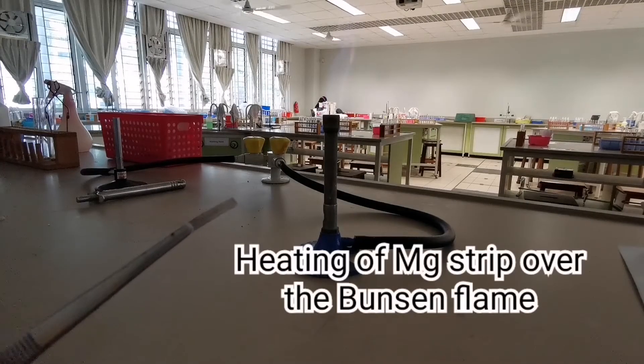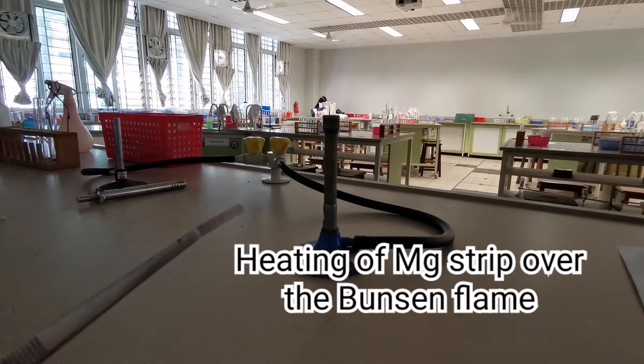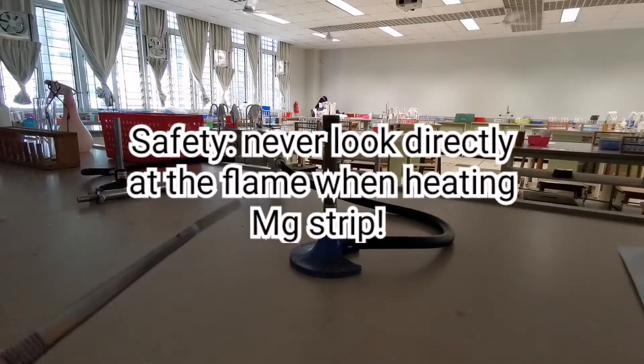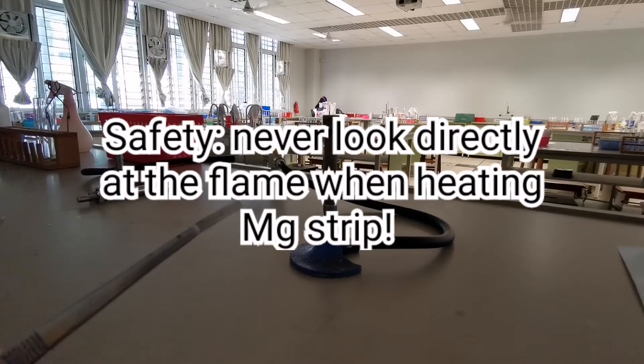Now, observe carefully what happens as we heat the magnesium strip over the Bunsen flame. A safety precaution: never look directly at the flame or the magnesium strip as it is being heated over the Bunsen flame.